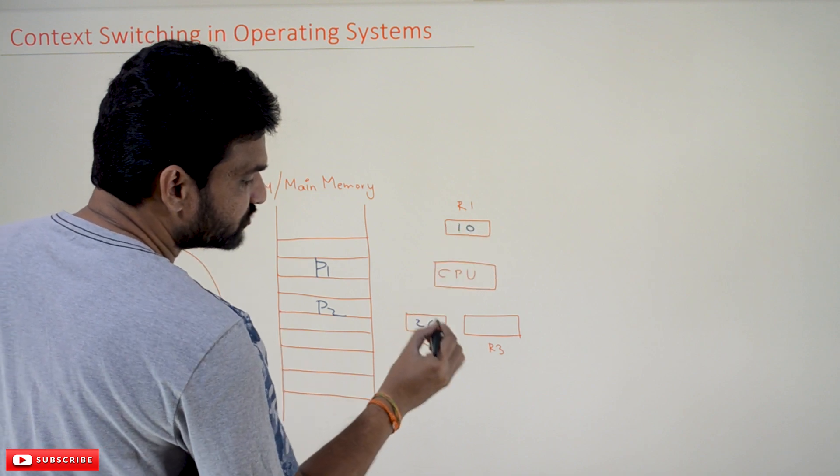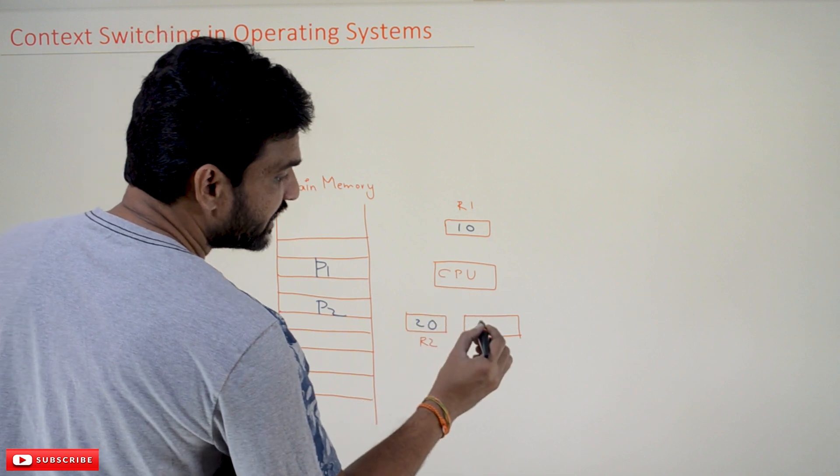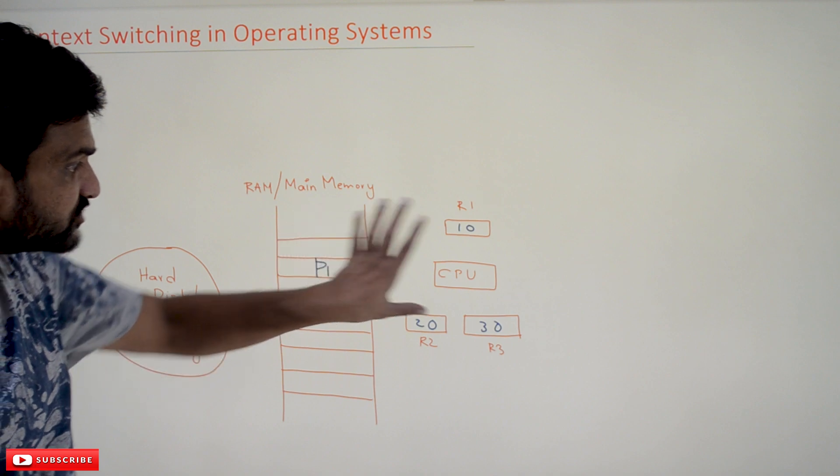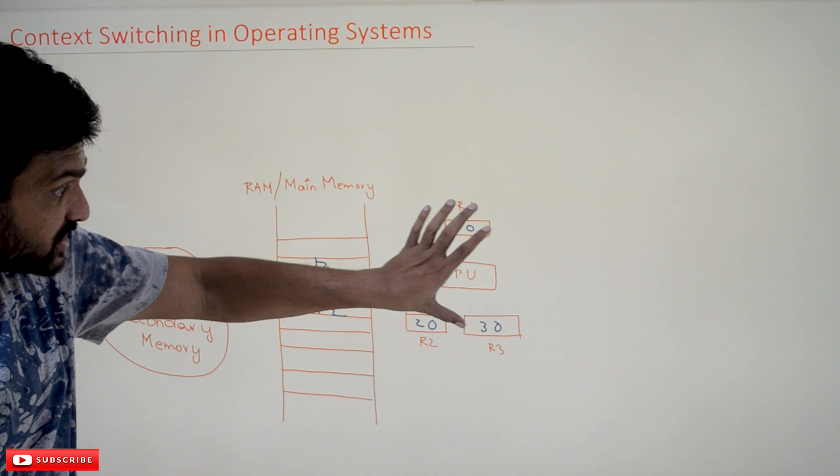For example, the instruction P1 is getting executed. In the process of executing the instructions, assume that in R1 we are having the value 10, R2 we are having 20, and R3 we are having 30.